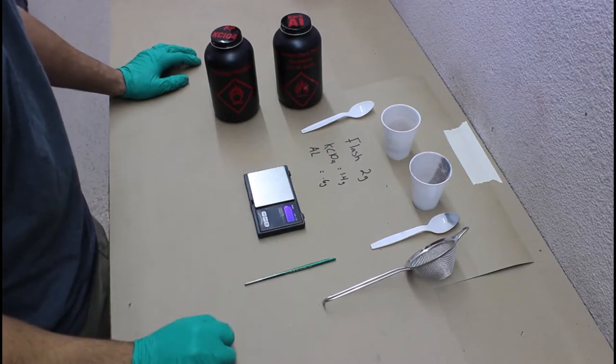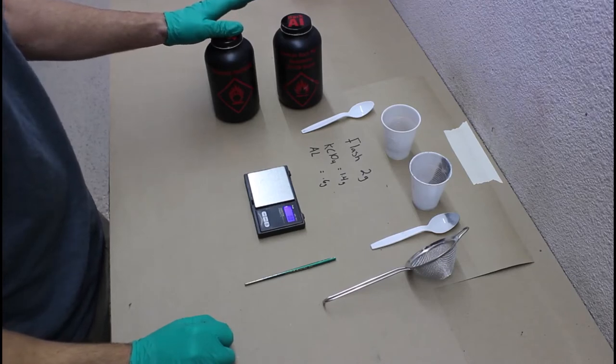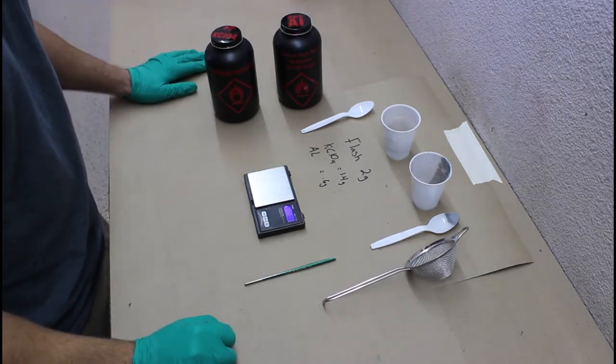So just start measuring that out. You're going to need 70% potassium perchlorate, which is about 1.4 grams, and then you're going to need 0.6 grams of the dark aluminum.